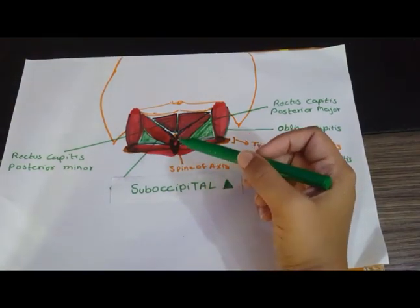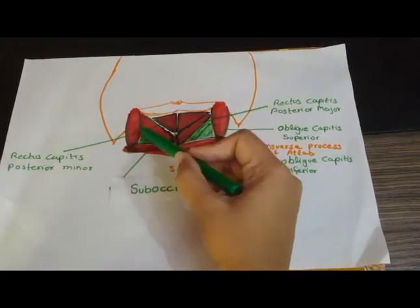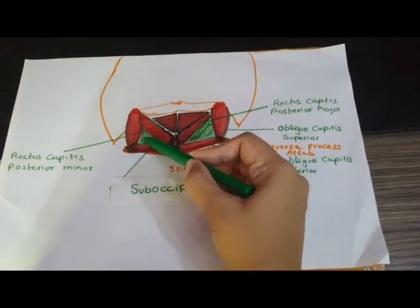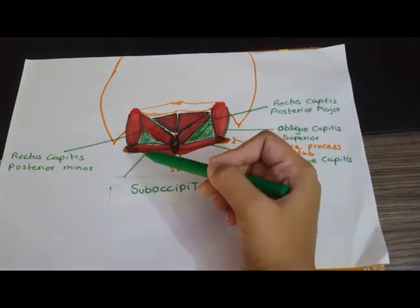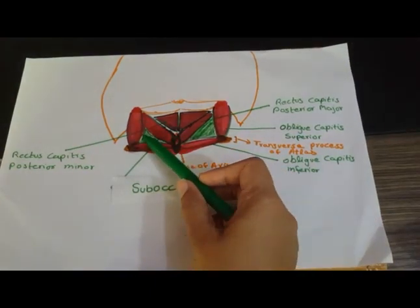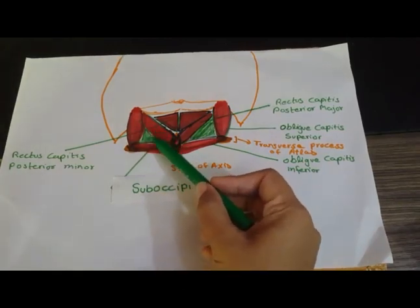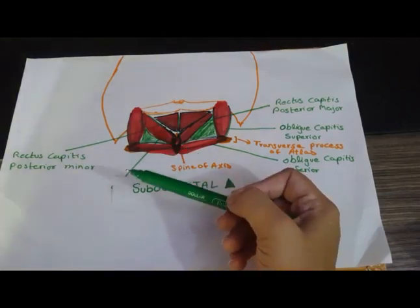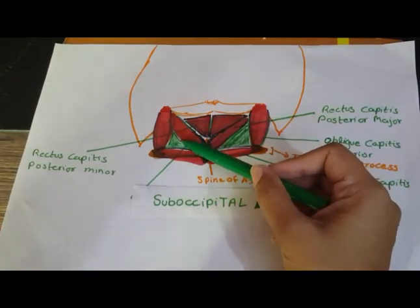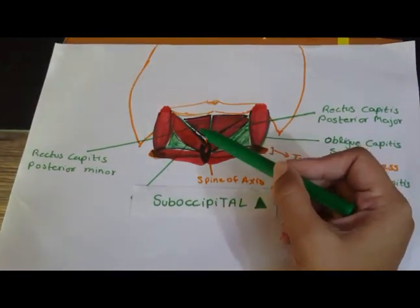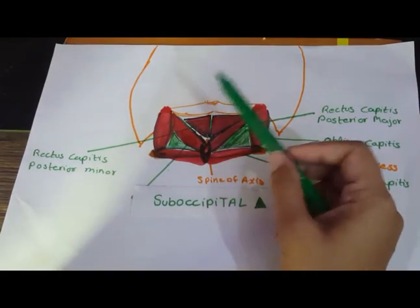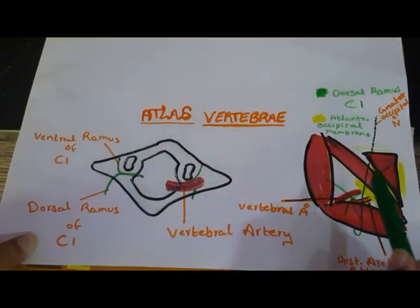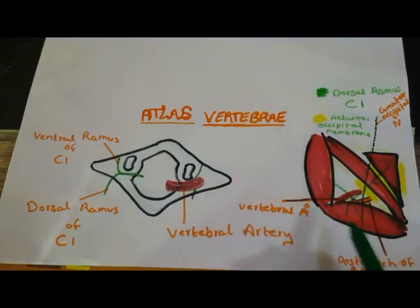Inferiorly, the suboccipital triangle is bounded by the oblique capitis inferior muscle. The roof of the suboccipital triangle is formed medially by the semispinalis capitis muscle and laterally by longissimus capitis and splenius capitis muscle. The floor of the suboccipital triangle is formed by the posterior arch of the atlas vertebrae — which is the first cervical vertebrae — and the posterior atlanto-occipital membrane, a membrane attached on the posterior arch of the atlas vertebrae and the margins of the foramen magnum.